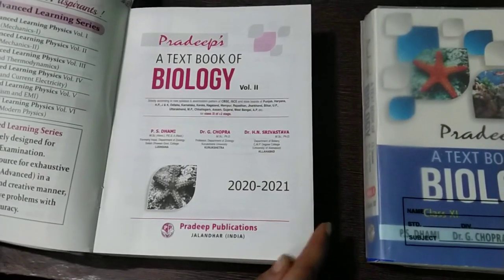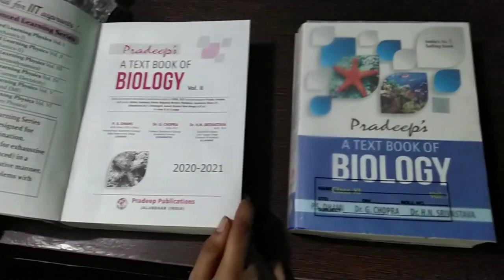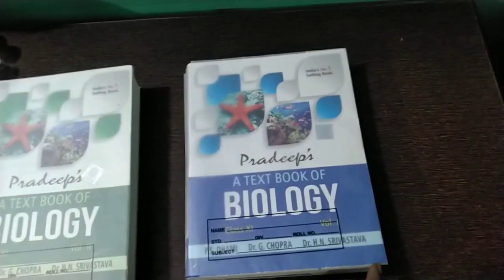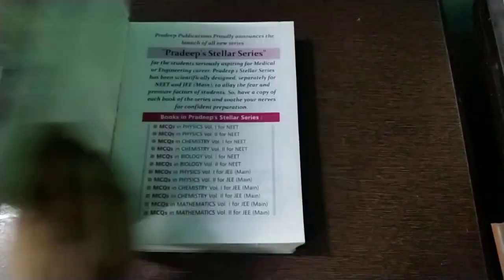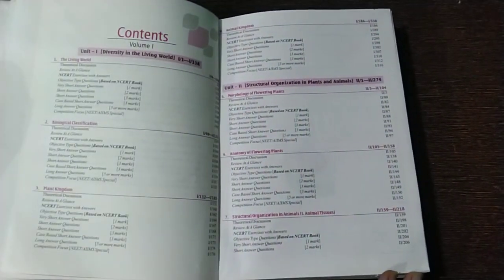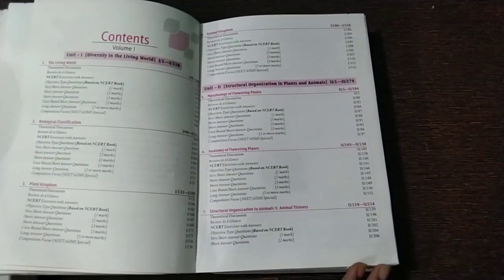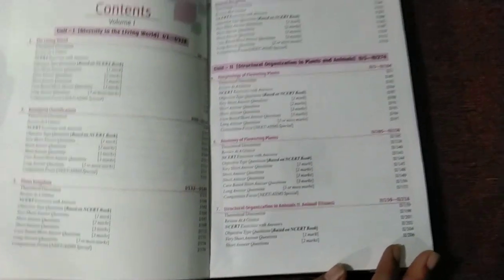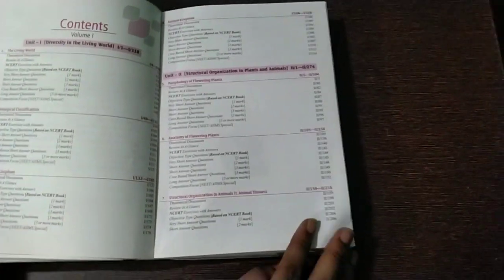This is the latest edition, 2021 edition, you can see. This is volume 1. You can see the content. All the syllabus of class 11 is given. The living world, biological classification, plant kingdom. It has 8 chapters.